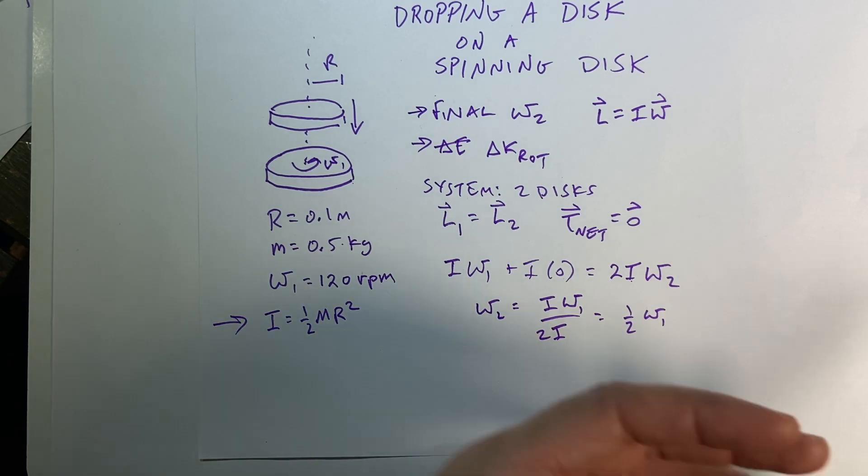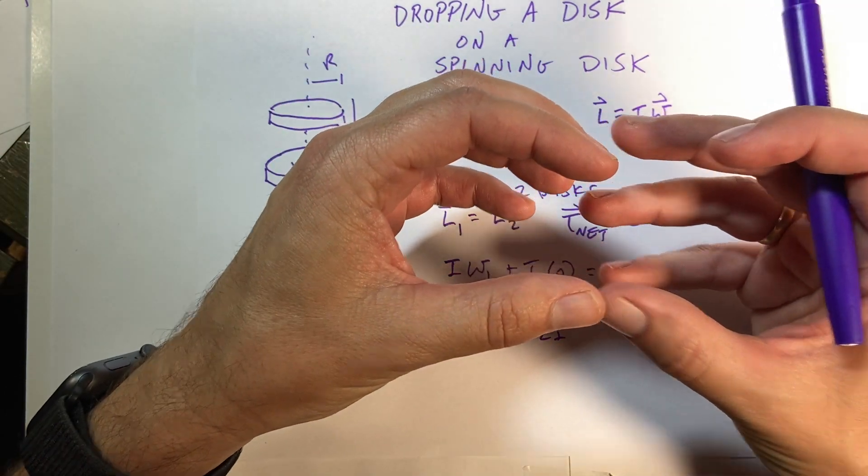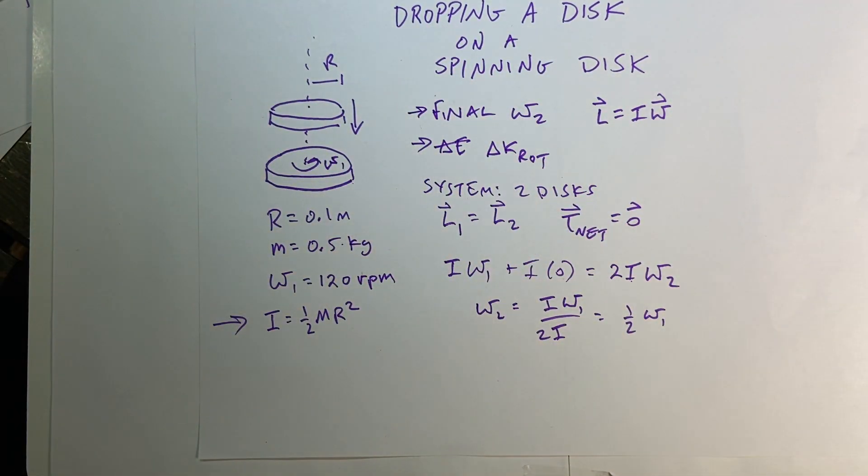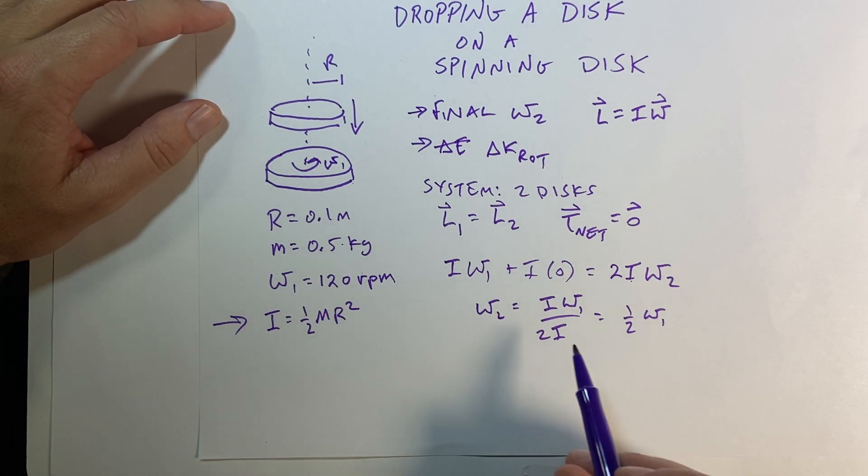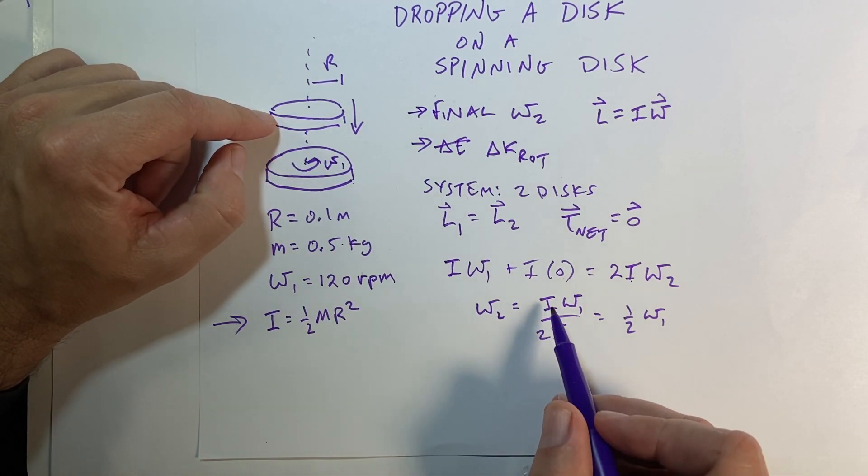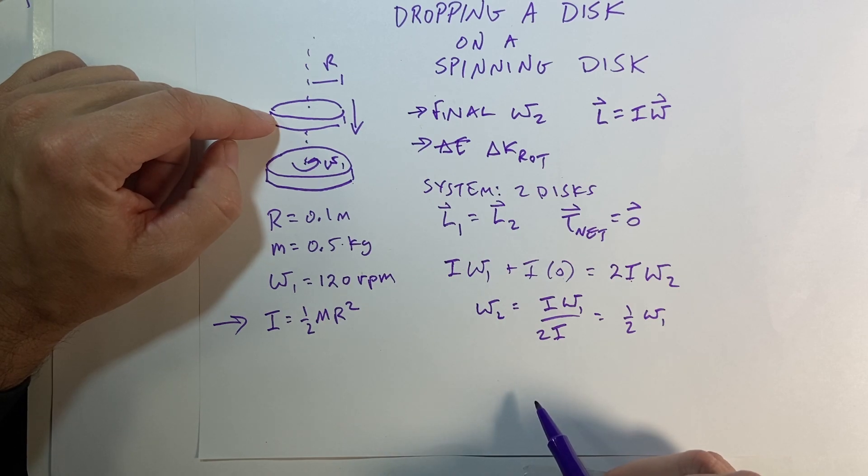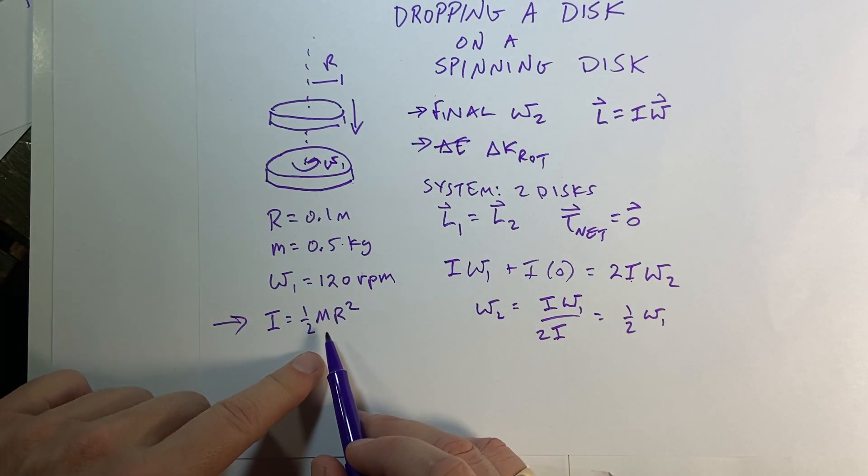This is just like taking two train cars and hitting a train car into a stationary car, and they're the same mass, momentum's conserved, they have half the initial velocity. Okay, but if these were different discs, that would not be true. You could get a different ratio of angular momentum. So I'm going to put this in here.